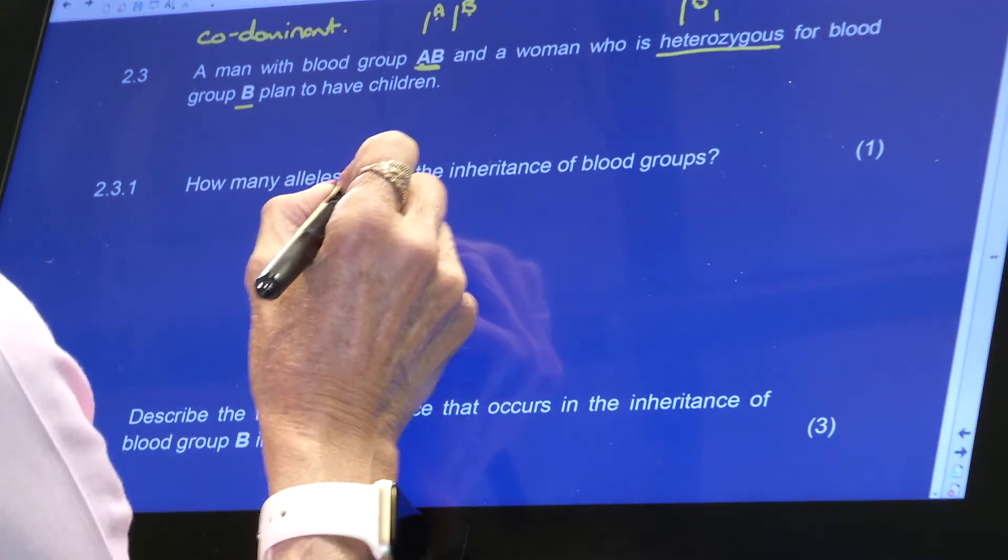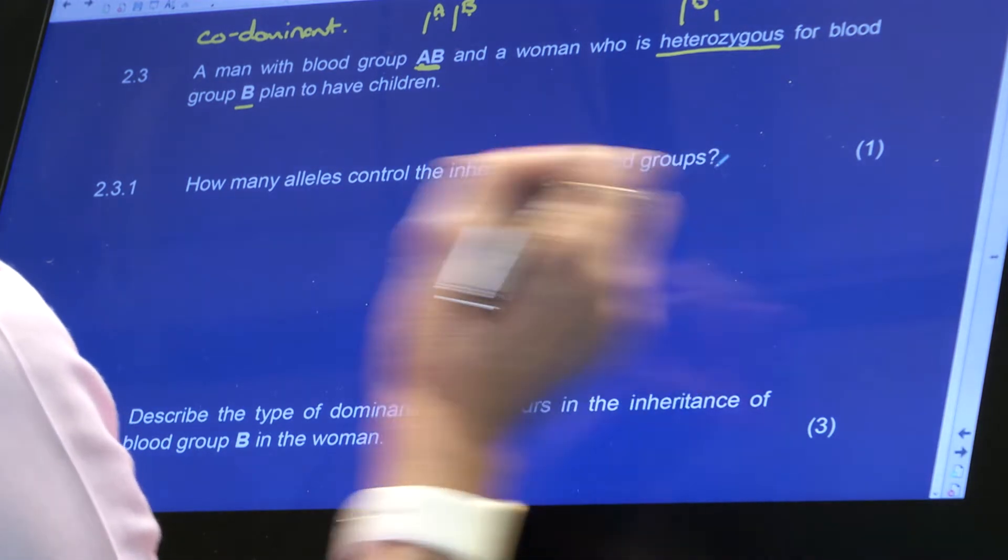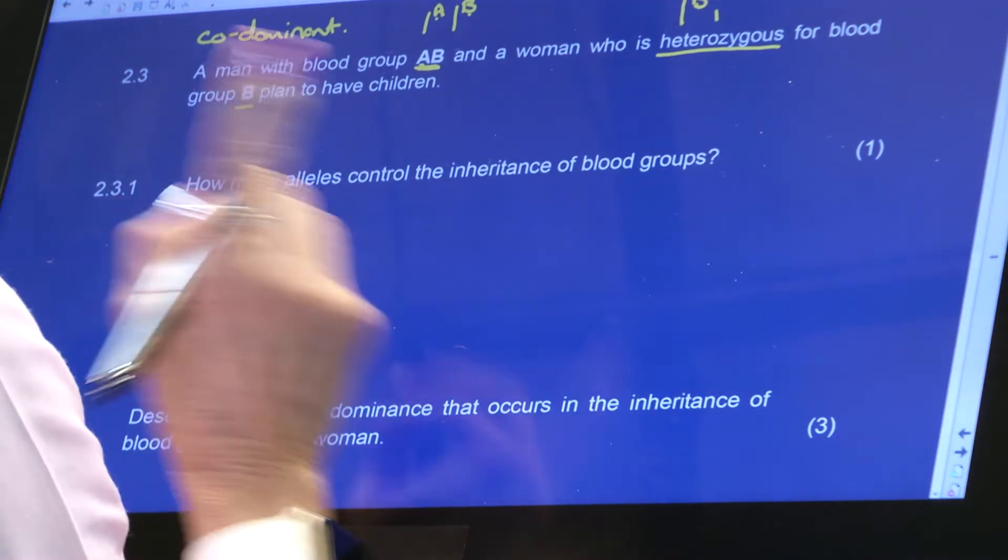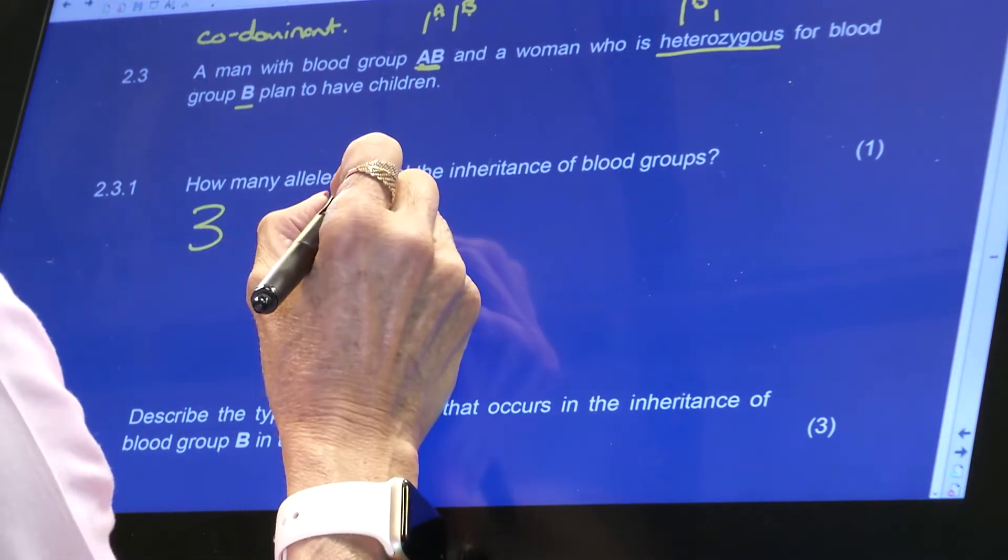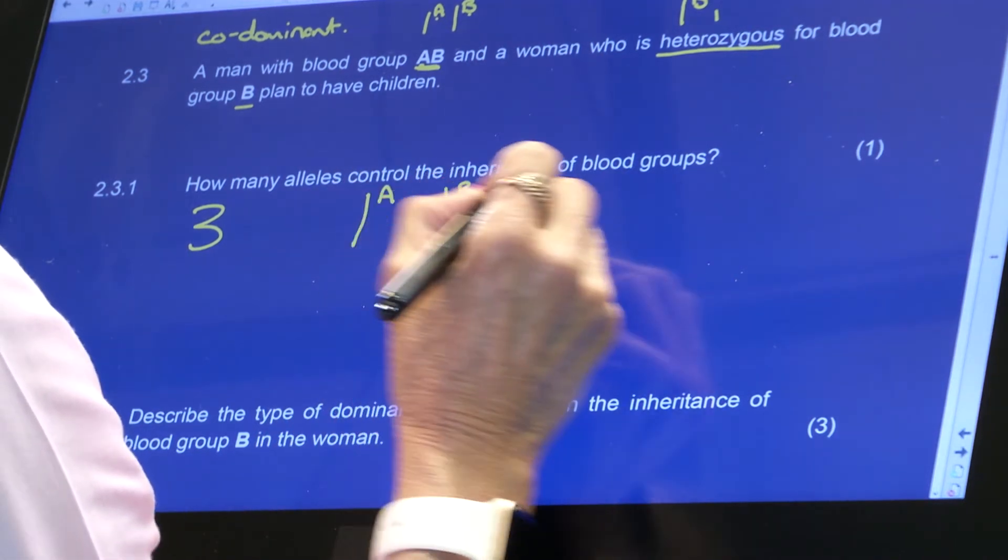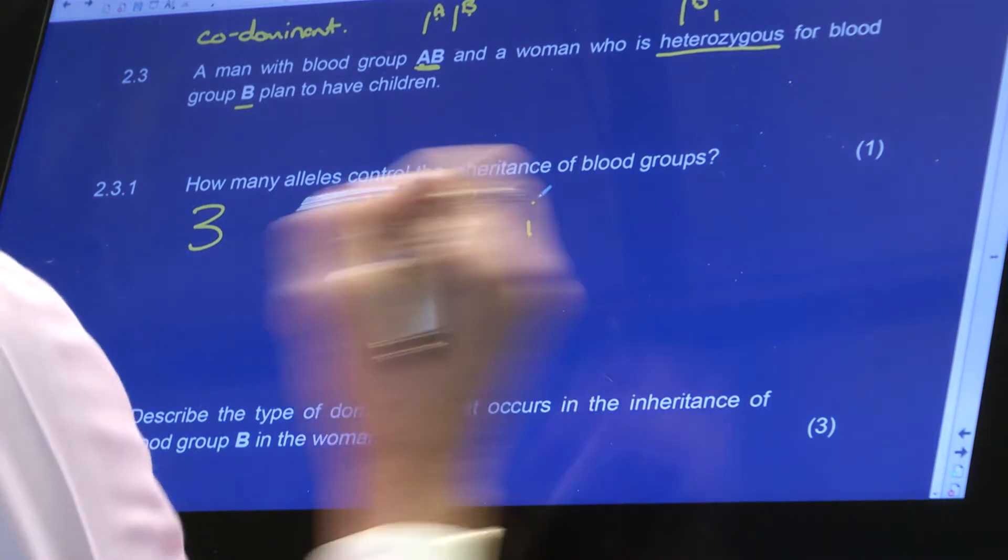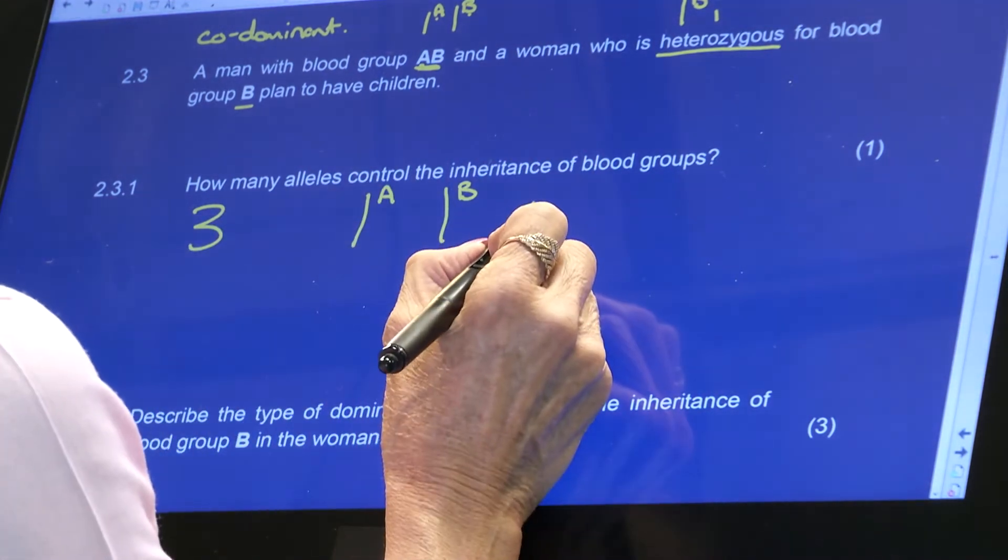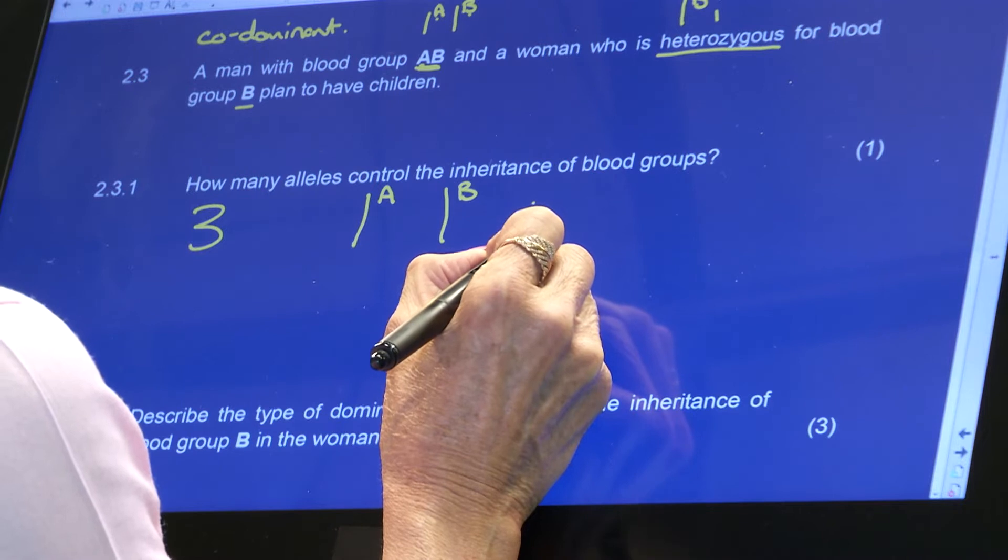How many alleles control the inheritance of blood groups? Well, there are three. That's the answer. But just so that you know, we have allele A, we have allele B, and we have allele I. And this will give you, if there are two of these, they're recessive...